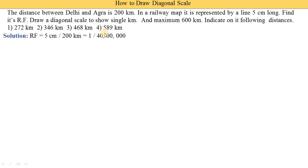First, we find out the representative fraction. The definition of representative fraction is dimension in drawing divided by actual distance. The dimension in the drawing is 5 centimeters and the actual distance is 200 kilometers. So, 5 centimeters divided by 200 kilometers gives us 1 upon 40.